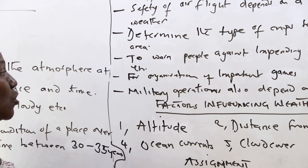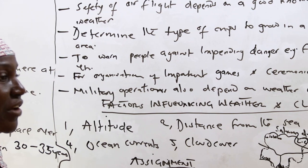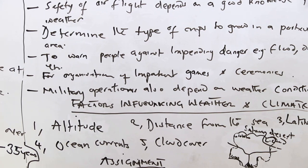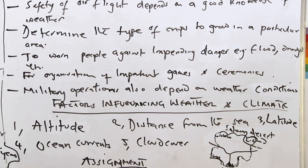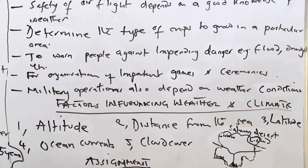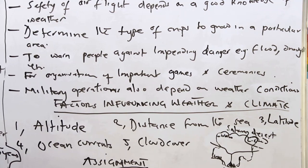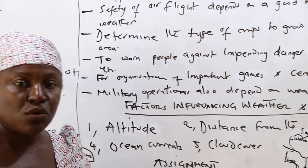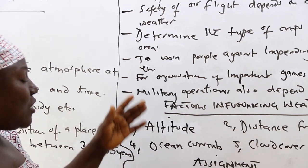The fifth major reason why we study weather and climate is for good organization of our programs, such as games, ceremonies, and so on. These are best done when the weather is good, so a knowledge of weather and climate can help in the organization of such programs. The last reason why we study weather and climate is for military operations, which also depend on weather conditions. Clarity of the weather will help in good operations.